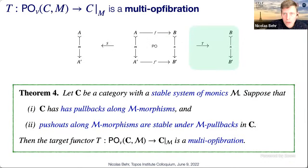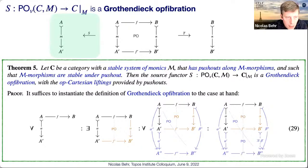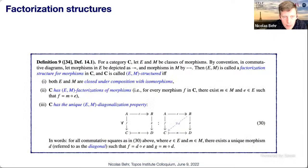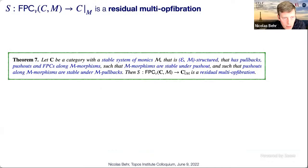For the FPC case we require an (E, M) factorization structure — M is a stable system of monics and E another class — so that any morphism factors as an element of M after an element of E. The residual multi-op vibration is produced with a calculus on FPC squares: given an FPC square with a factored vertical left part, you take a pushout; if the mediating morphism is not in M you take an EM factorization and then a pullback, which by a lemma produces two FPC squares.